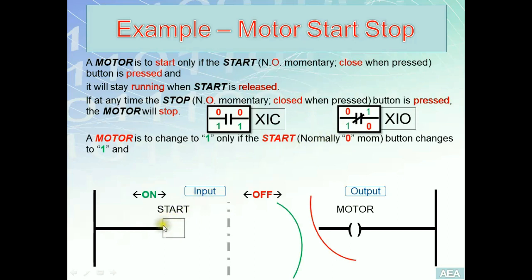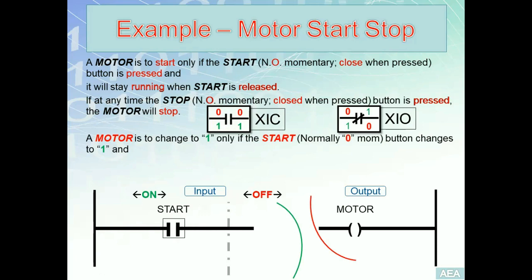For the start button, XIC or XIO? The requirement says the motor is to change to one when the input changes to one. The key concept is that for deciding which instruction to use, we consider the changed state of the input, not the default state. The default state of the normally open start switch is zero; when pressed it closes and changes to one. Since the motor changes to one when start changes to one, we use XIC for start.